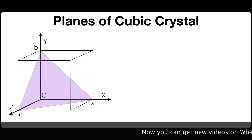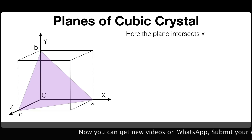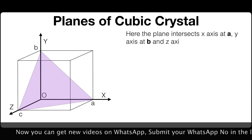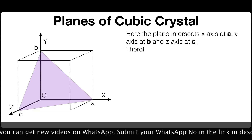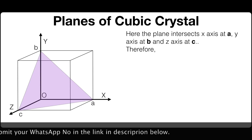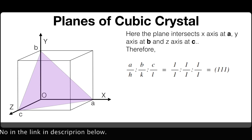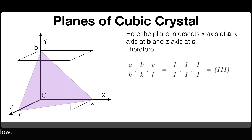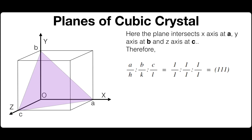In the last case, the plane intersects the x-axis at A, the y-axis at B, and the z-axis at C. Therefore the ratios A/H : B/K : C/L = 1/1 : 1/1 : 1/1, which comes to 1, 1, 1. Therefore the Miller indices of this plane is (1 1 1).